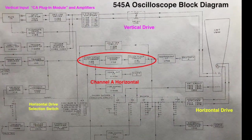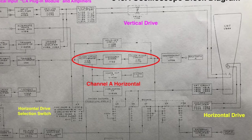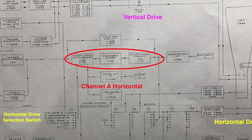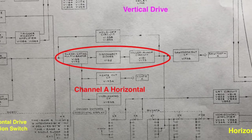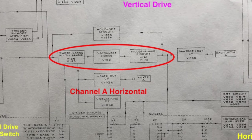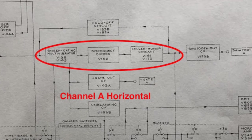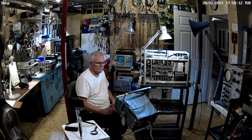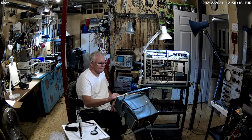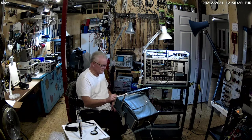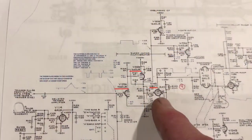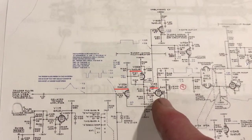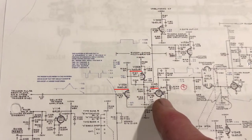Now knowing what to look for, we tackled the horizontal sweep on the A channel and measured the output from the multivibrator as well as the Miller run-up circuit. In both cases I got no signal. As the multivibrator is ahead of the run-up circuit, I decided to focus on it.